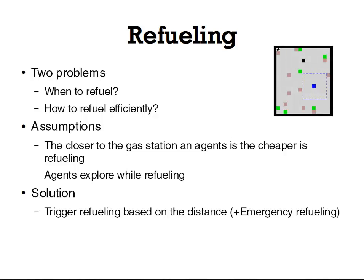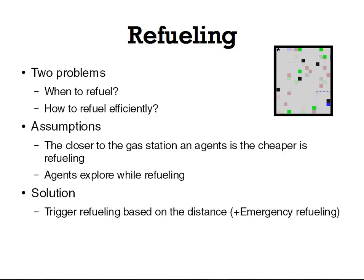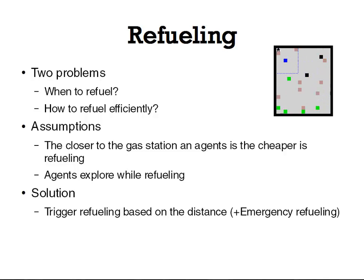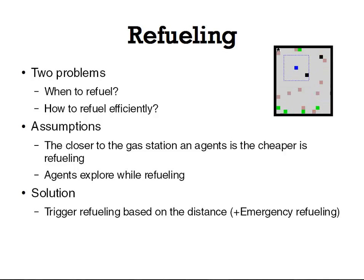The second important issue is refueling. It can be divided into two equally important sub-problems: we must decide when to refuel and how to execute refueling efficiently. My solution is based on two assumptions: the closer an agent is to the gas station, the cheaper it is to refuel; and an agent can explore and pick up tiles while refueling. Therefore, it would be wasteful to send two agents to refuel at the same time. In this solution, the refueling procedure is triggered based on the distance from the station. An agent waits for the other agent to finish the procedure. If an agent is running out of fuel while another agent is still refueling, emergency refueling is activated.